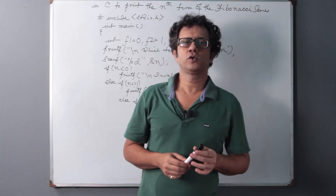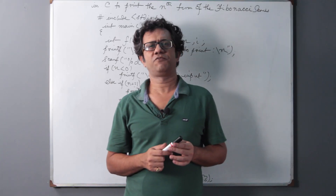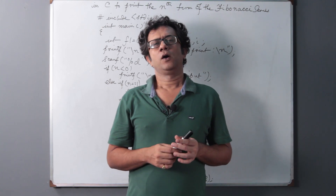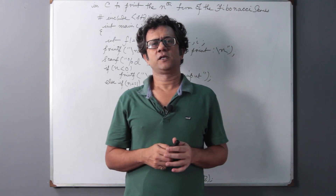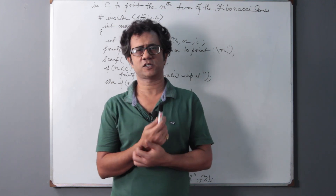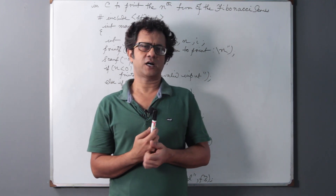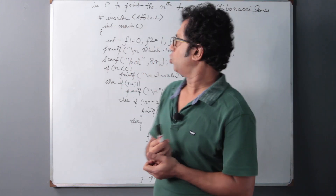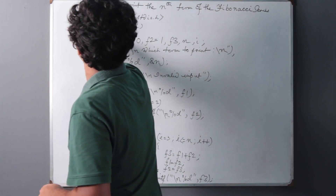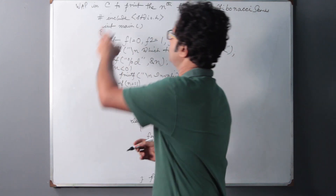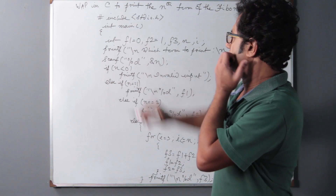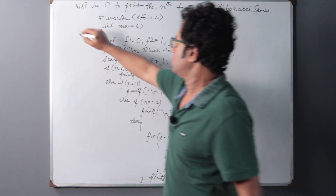Hello friends, today we are going to discuss a variant of the previous program — the Fibonacci series. We are going to print the nth term of the Fibonacci series today in this class. Let us get started with the program. As I have written on the board, you can see the question: WAP in C — write a program in C to print the nth term of the Fibonacci series.